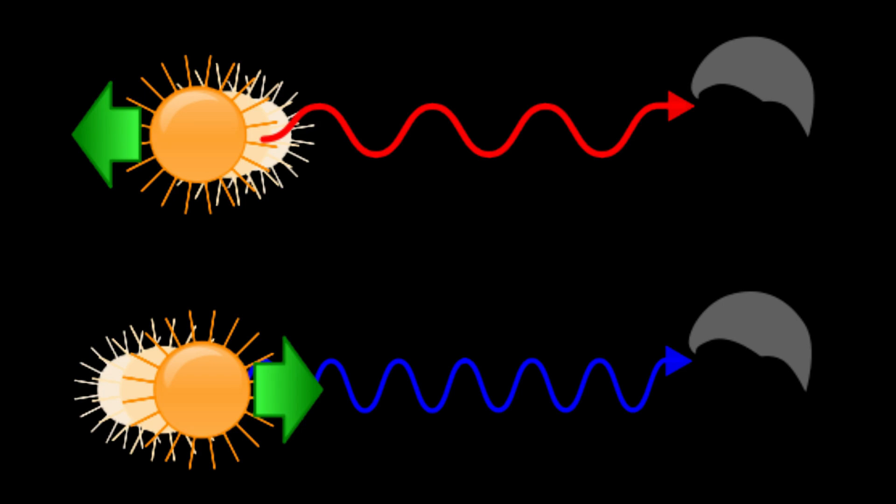On the other hand, blue light has a shorter, compressed wavelength. When an object moves toward us, the light is compressed — this is called a blue shift.